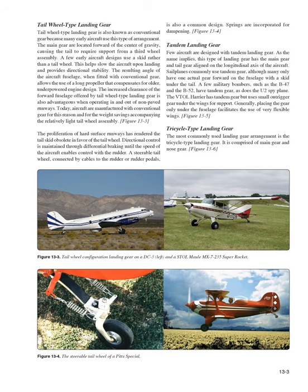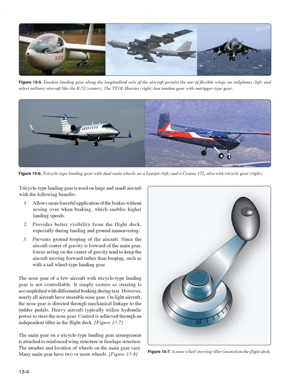Generally, placing the gear only under the fuselage facilitates the use of very flexible wings. Tricycle-type landing gear is the most commonly used landing gear arrangement. It is comprised of main gear and nose gear, and is used on large and small aircraft with the following benefits: 1) Allows more forceful application of the brakes without nosing over when braking, enabling higher landing speeds. 2) Provides better visibility from the flight deck, especially during landing and ground maneuvering. 3) Prevents ground looping of the aircraft, since the aircraft's center of gravity is forward of the main gear, keeping the aircraft moving forward rather than looping.